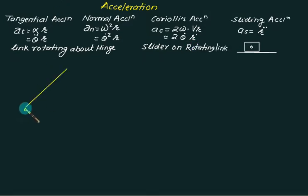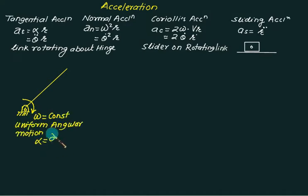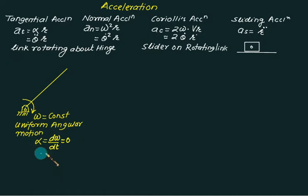Consider a link hinged at point O rotating at constant angular velocity omega. This means angular acceleration alpha equals zero, since alpha is defined as d-omega by dt, and since omega is constant, its derivative is zero. So when we say uniform angular motion, there is no angular acceleration.